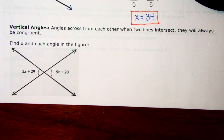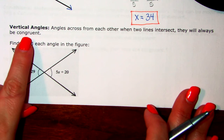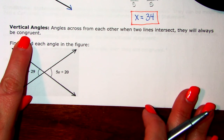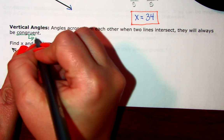Alright, in this last video we're going to be focusing on vertical angles, and those are angles across from each other when two lines intersect. The vertical angle postulate that we learned tells us they will always be congruent, which remember means they will have equal measures.